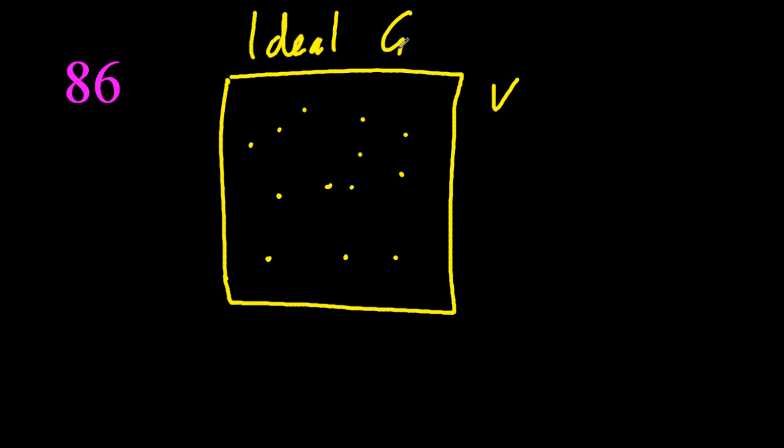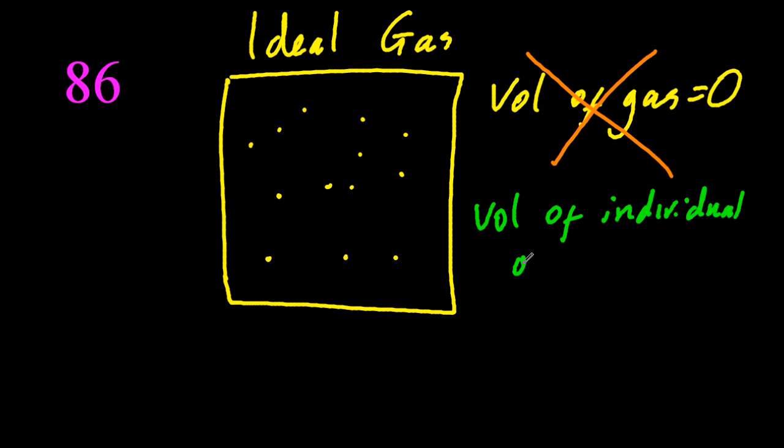An ideal gas, the volume of an ideal gas is always zero, isn't it? No, it's not. That's utter rubbish. The volume of each individual gas particle in an ideal gas is zero.